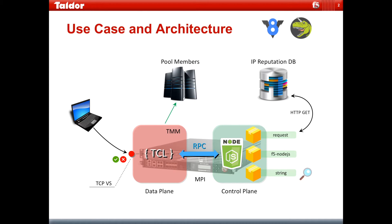In case of a good reputation, the connection back to the pool members is going to be allowed. So the use case here is that a client PC is going to try accessing a TCP virtual server that will have no HTTP logic. The TCL iRule is going to take the client IP, pass it over the RPC channel to the Node.js module, which in turn is going to query the IP reputation database, and if the result is clean, the connection back to the pool members is going to be allowed. Please pay attention to the TMM and the TCL iRule connecting over RPC to the Node.js process — the data plane connection to the control plane over the MPI. This is the iRules LX architecture.